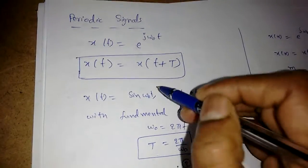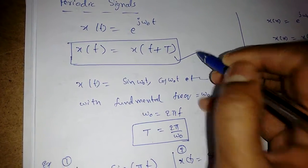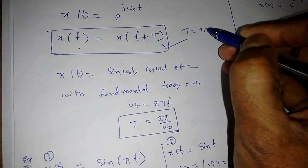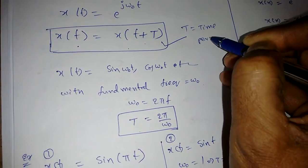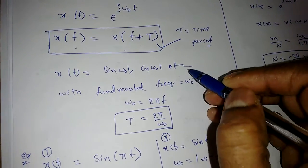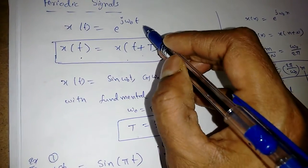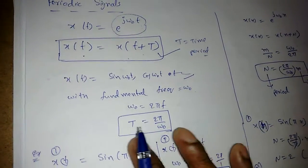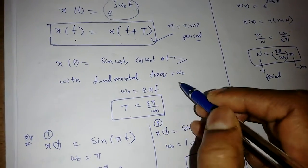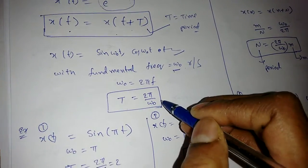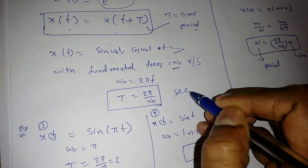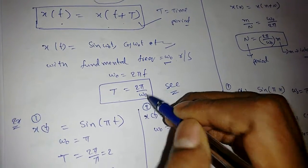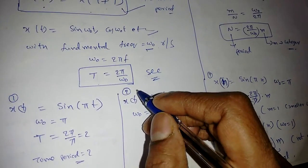Next are periodic signals. A periodic signal satisfies x(t) = x(t + T), where T is the time period. All sinusoidal signals and exponential signals of the form e^(jω₀t) are periodic with fundamental frequency ω₀ radians per second. The time period T equals 2π/ω₀ seconds.